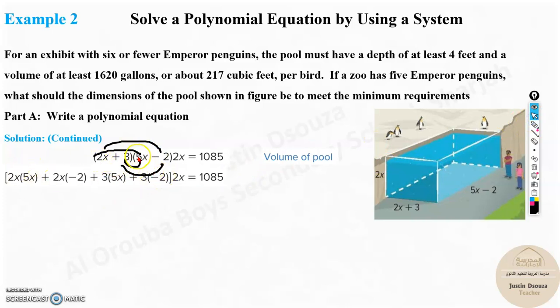So it would be 2x times 5x plus 2x times negative 2, plus 3 times 5x plus 3 times negative 2. And then, whatever you get the answer, multiply it by 2x. So when you multiply over here, you will get 10x squared. So 5 times 2 is 10. X times x is x squared. Negative minus becomes negative 4, 2 times 2 is 4x. And 3 times 5 is 15x. And over here, you have minus 6.